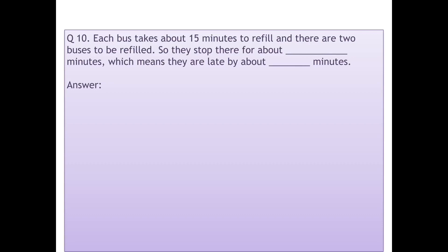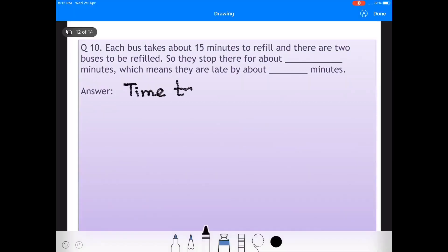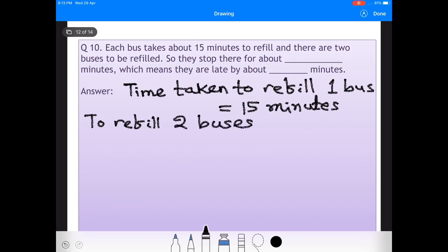Question Number 10: Each bus takes about 15 minutes to refill, and there are two buses to be refilled. So they stop there for about 10 minutes, which means they are late by about 10 minutes. Time taken to refill two buses is equal to 2 times 15, that equals 30 minutes. So they stop there for about 30 minutes, which means they are late by about 30 minutes.